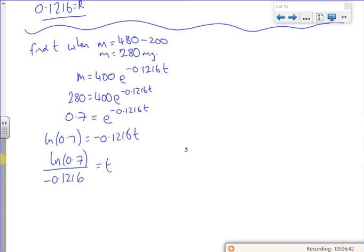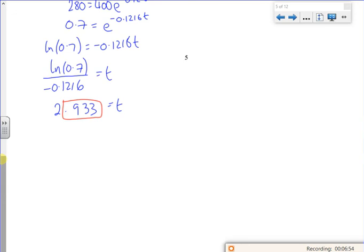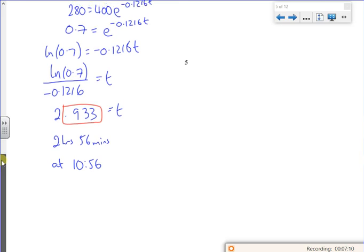It gives me 2.933. If I multiply the 0.933 by 60, it gives me roughly 2 hours 56. So if I started drinking at 8am to keep it low, I could have another one at 10:56. So that's part B done.